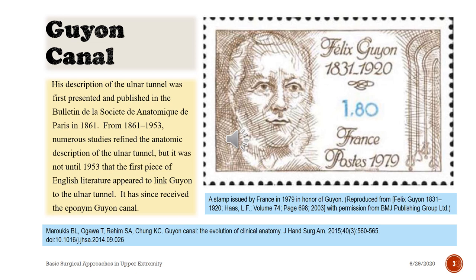From 1861 to 1953, numerous studies refined the anatomic description of the ulnar tunnel, but it was not until 1953 that the first piece of English literature appeared to link Guyon to the ulnar tunnel. It has since received the eponym Guyon Canal.